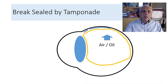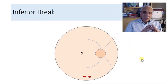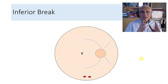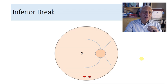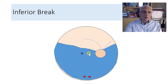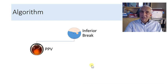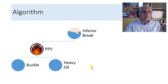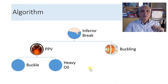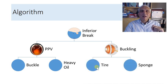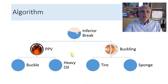Now suppose we have an inferior break. This patient has got a macular-off retinal detachment with small holes in the periphery. The options are: pars plana vitrectomy with a buckle, or with heavy silicone oil — we'll explain why heavy silicon oil is needed — or scleral buckling with a tire or a sponge. Note we did not say air or gas here, as that is different for the inferior break.